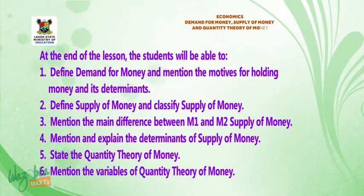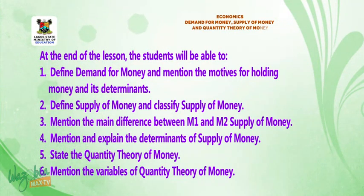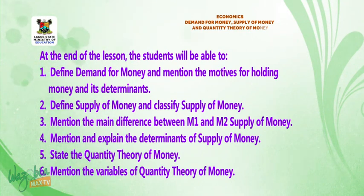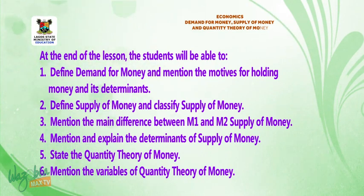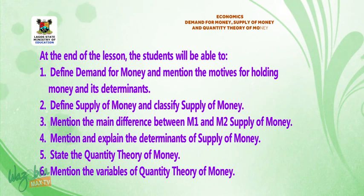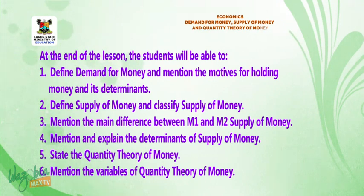At the end of the lesson, the student will be able to: define demand for money and mention motives for holding money and its determinants; define supply of money and classify supply of money; mention the main difference between M1 and M2 supply of money; mention and explain determinants of supply of money; and state the quantity theory of money.